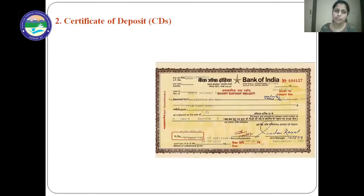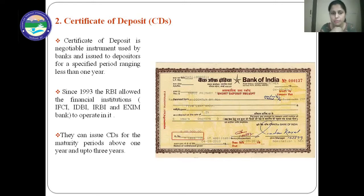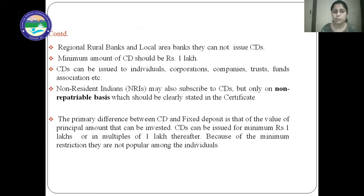Next is the certificate of deposits. A certificate of deposit is a negotiable instrument used by banks and issued to depositors for a specified period of less than one year. Since 1993, the RBI allowed IFC, IDBI, RBI, and Exim Bank — that is Export-Import Bank — to operate in it. Besides banks, these institutes can also issue certificate of deposits, but they can issue them from one year up to three years. Whereas banks issue certificate of deposit for less than one year. Regional rural banks and local area banks cannot issue certificate of deposit.